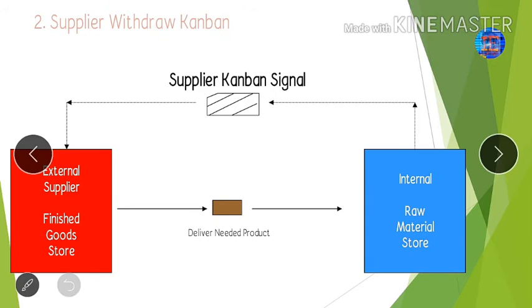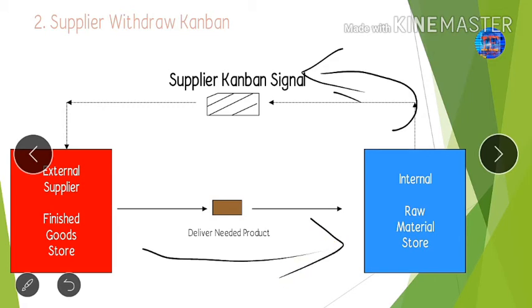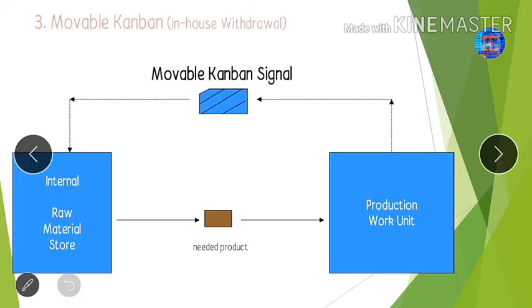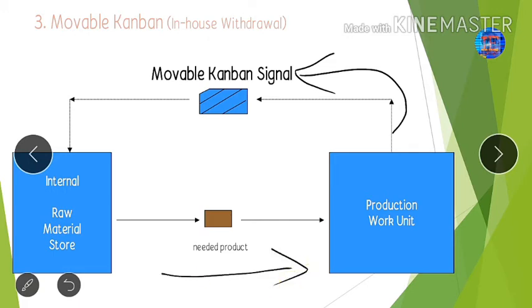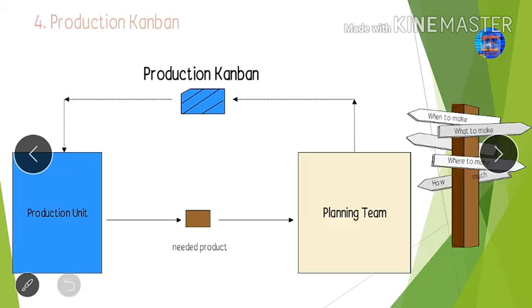For supplier withdraw Kanban: when we need parts, we pull our supplier through the Kanban, and the supplier delivers the parts to our raw materials store. For in-house withdraw Kanban: when the production unit requires raw material from the raw material store, the production unit pulls the internal raw material store through the in-house withdrawal Kanban, and the raw material store delivers the parts to the production unit.